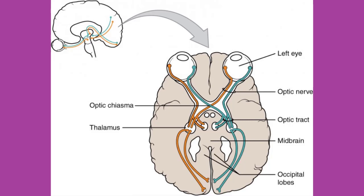A similar situation outside of science can be described for some roads. Imagine a road called Road Street in a town called Annieville. The road leaves Annieville and goes to the next town called Hometown. When the road crosses the line between the two towns, its name changes to Main Street. That is the idea behind the naming of the retinal axons — in the peripheral nervous system, they are called the optic nerve, and in the CNS, they are the optic tract.